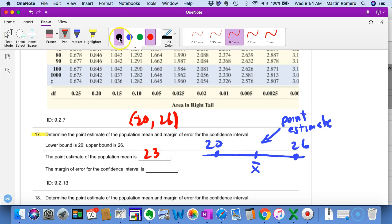And then the margin of error that created this confidence interval would be the distance from the mean to the bounds. That's your E, and it doesn't matter which direction we go. So that distance has to be 3.